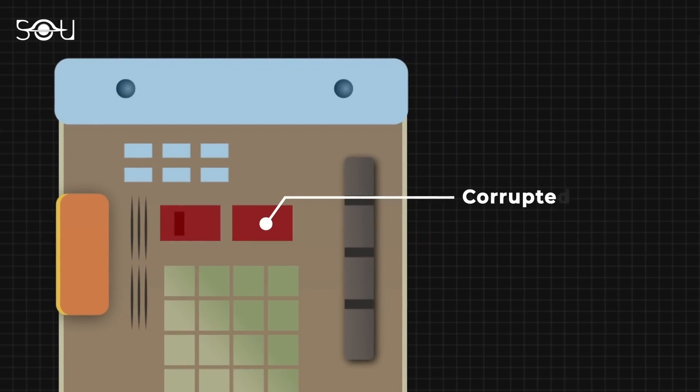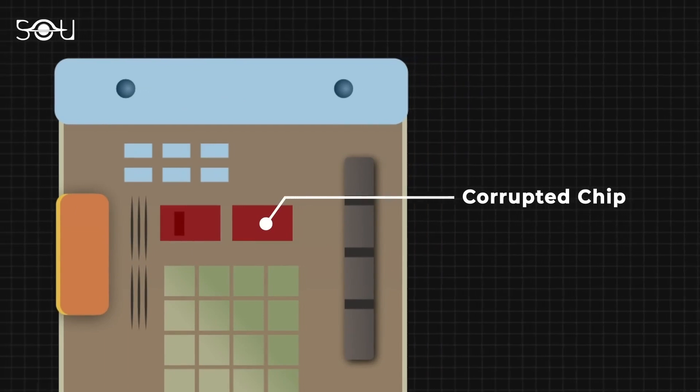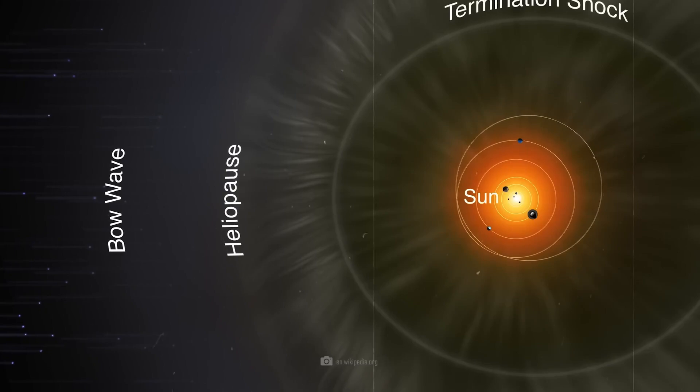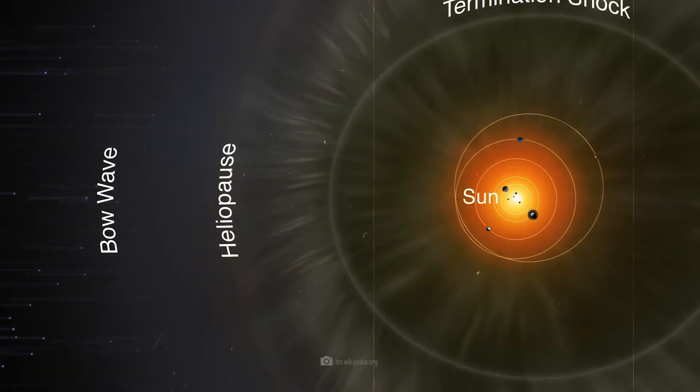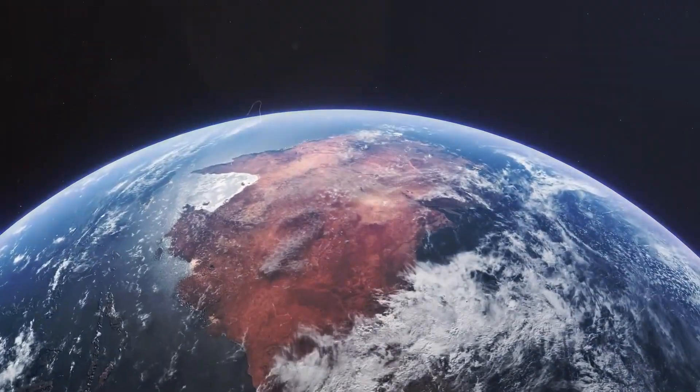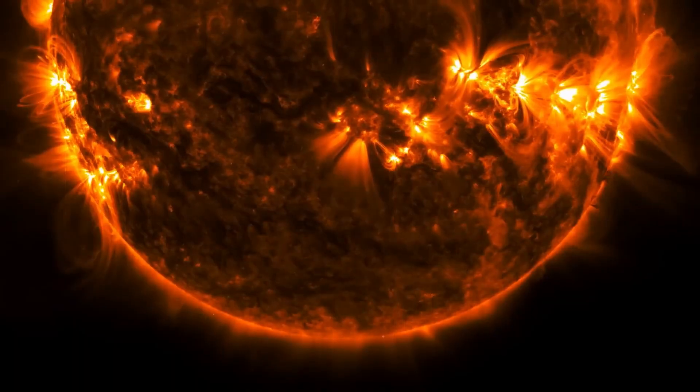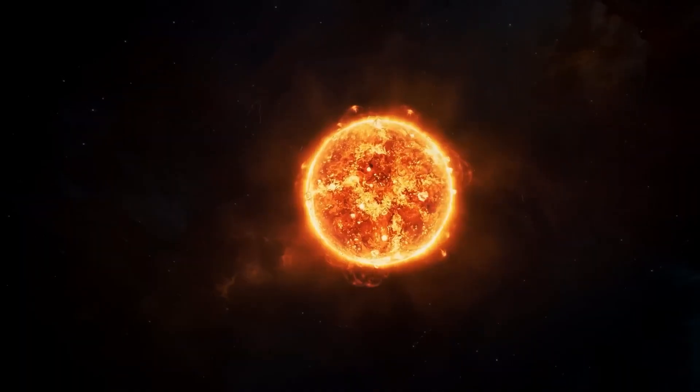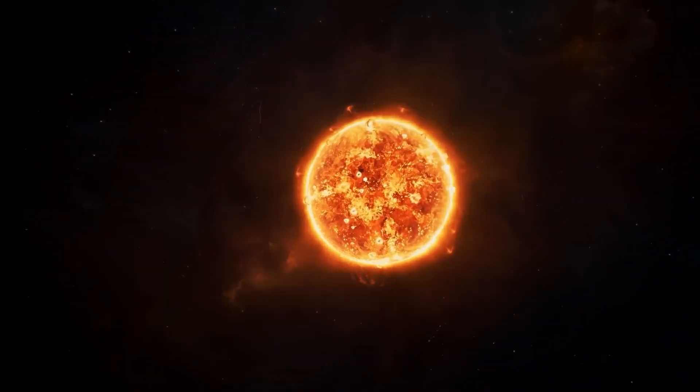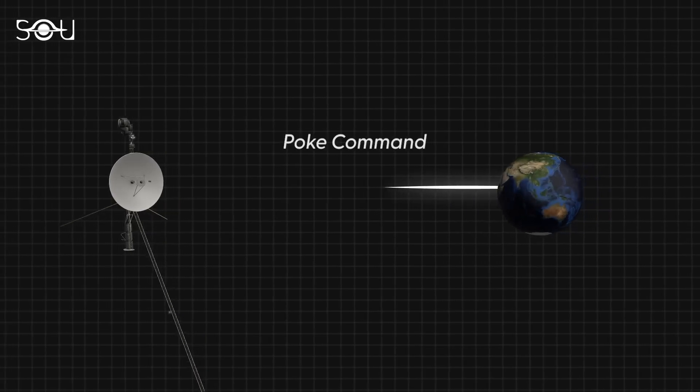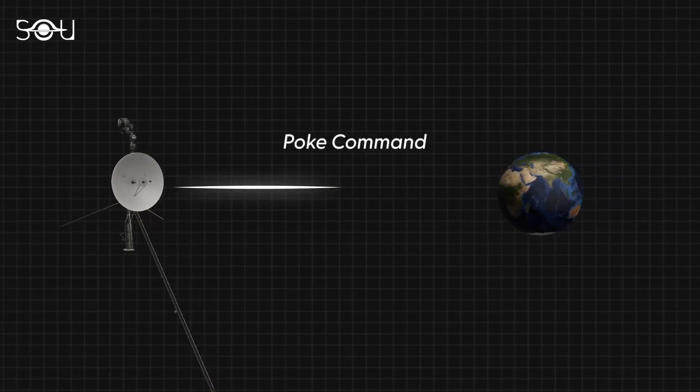To fix the issue, the engineers devised a plan to relocate the affected code to other parts of the FDS memory, but this wasn't straightforward. They had to divide the code into pieces and update references to ensure proper functionality. After moving the code in April 2024, the team waited 22.5 hours for a response from Voyager 1. When it finally came back, the data indicated that the fix had worked, allowing them to monitor the spacecraft's health and status again.